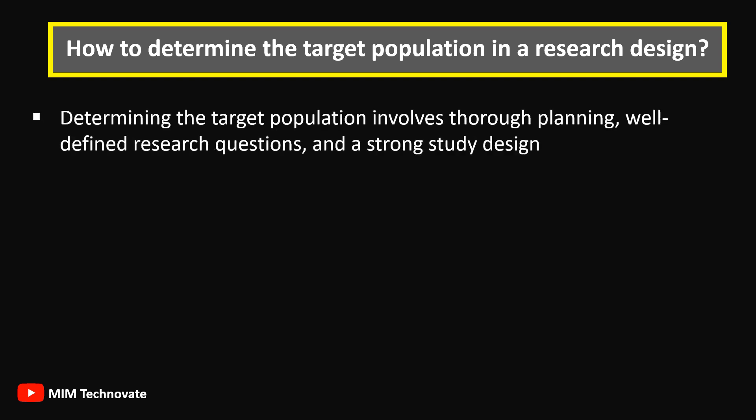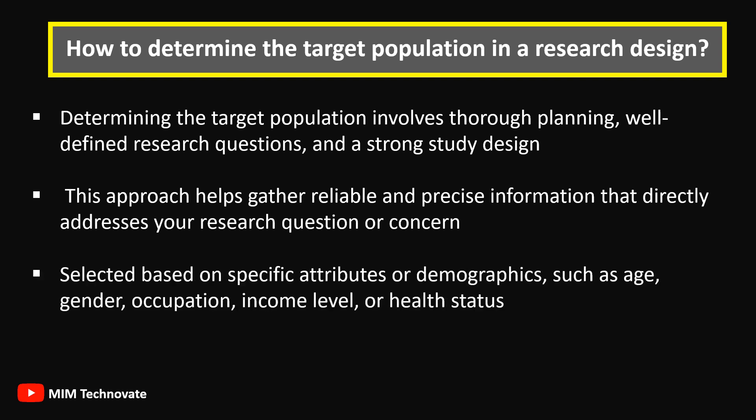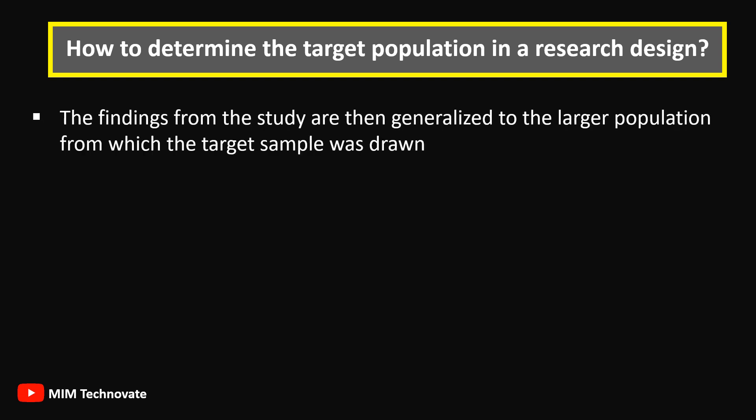The target population involves thorough planning, well-defined research questions, and a strong study design. This approach helps gather reliable and precise information that directly addresses your research questions or concerns. The target population is often selected based on specific attributes or demographics such as age, gender, occupation, income level, or health status. The findings from the study are then generalized to the larger population from which the target sample was drawn.